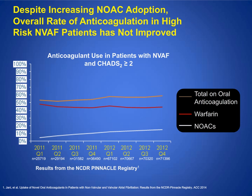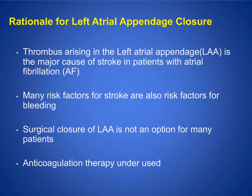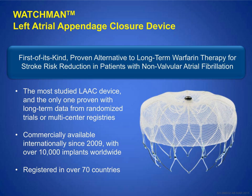Despite new oral anticoagulants, patients are still reluctant to take these medications. Approximately 50% of patients who should be on anticoagulant therapy are not taking it. There is an unmet need because there's a relative or absolute contraindication — many patients who should be on medications just can't take them and are at risk of stroke. That's why Watchman therapy is so important.